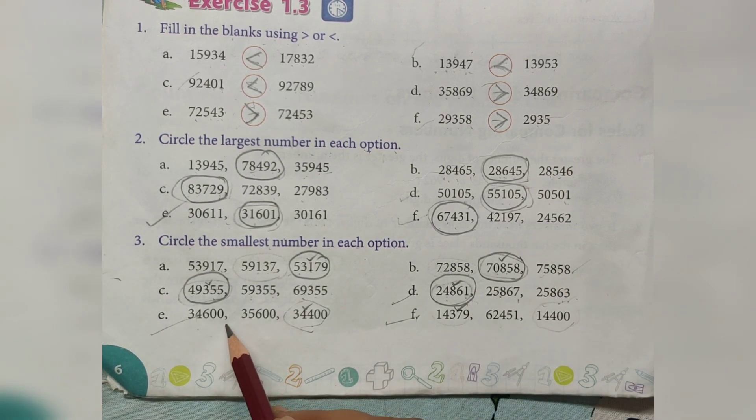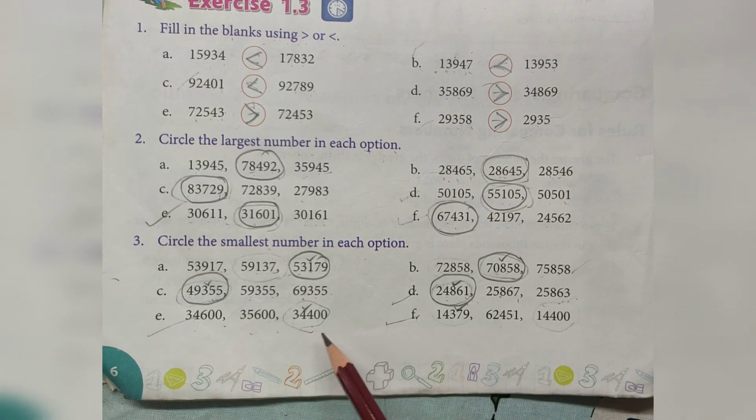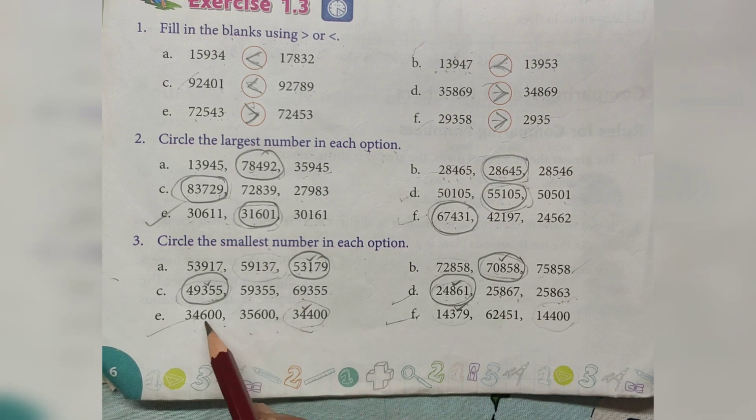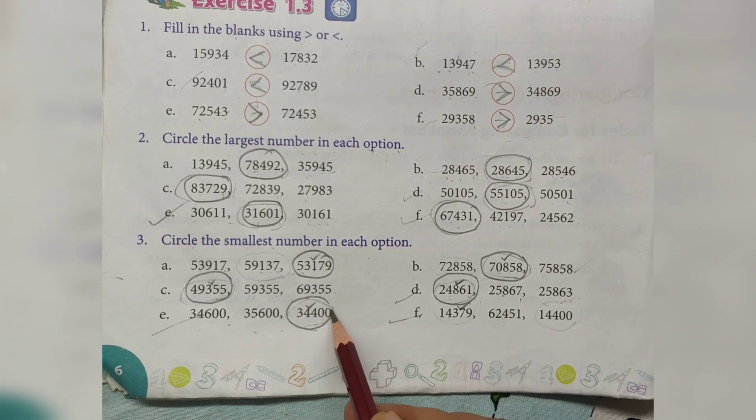34,600, 35,600, 34,400. Which is smallest number? 34,400.